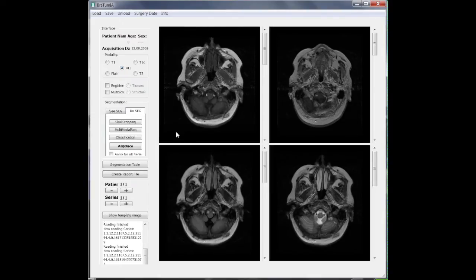After you have to load your images, you have to do the segmentation. The easiest way of doing that is to do it all at once by clicking all at once.